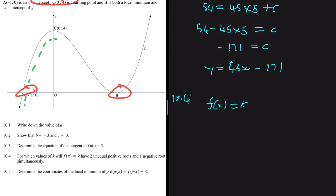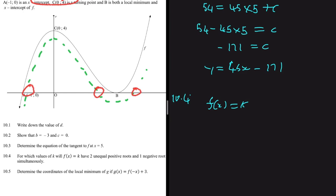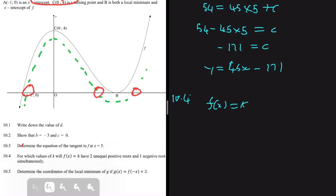If we shift the graph slightly down, we'll have two positive roots and still one negative root — that's what we want. But if we shift it too far down, one root will land at zero (a neutral root) and we'll only have one positive root, which is not what we're looking for. So we need a limit on how far we shift.